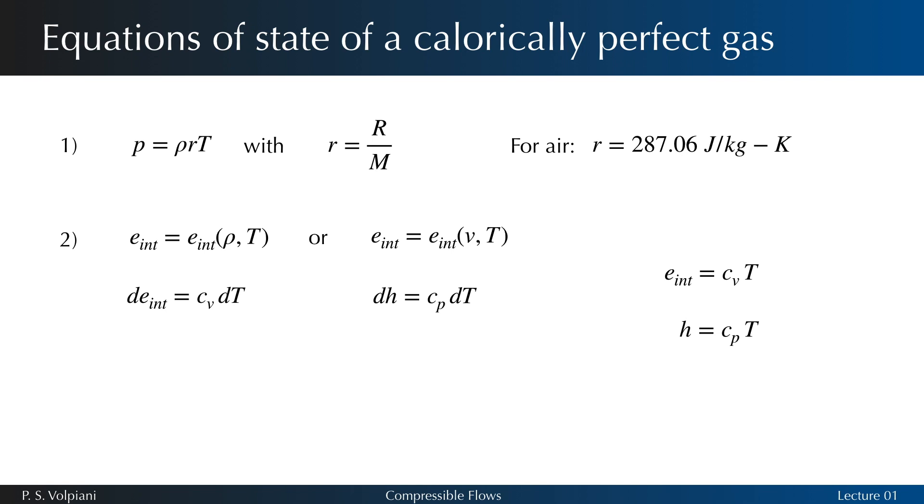We can now derive the Meyer relation. It says that Cp - Cv = R. Since Cp and Cv are constant, we can introduce a new coefficient, γ, ratio of these specific heats. For air flows in which the temperature does not exceed 600 Kelvin, the coefficient γ remains constant and equals to 1.4. We can also derive the following expressions for Cv and Cp. And the equation of state can be expressed as p = (γ - 1)ρe_int.